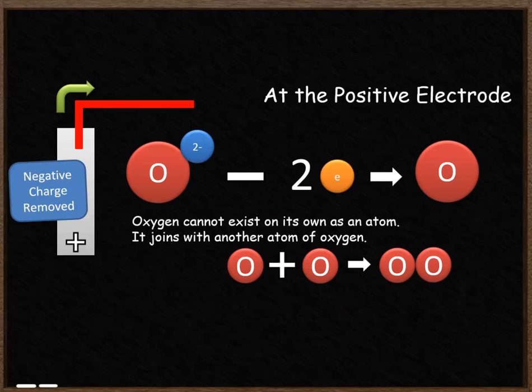So your equation written in the paper would look like O2- loses two electrons to become oxygen. Then two oxygen atoms join together to become O2.